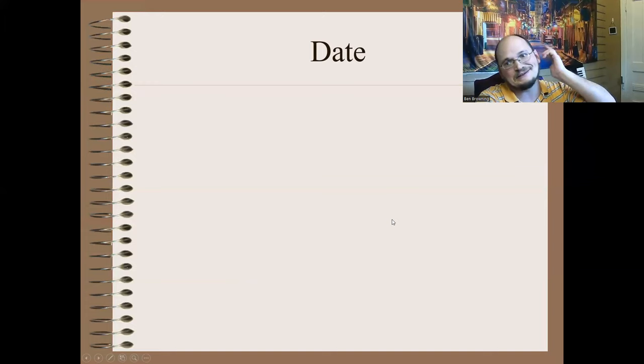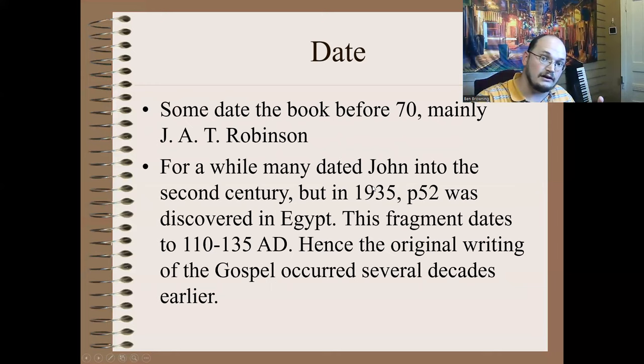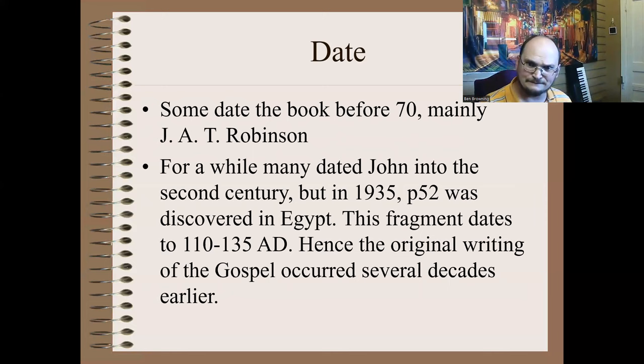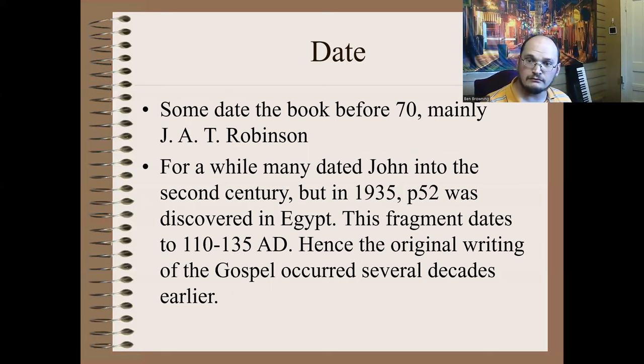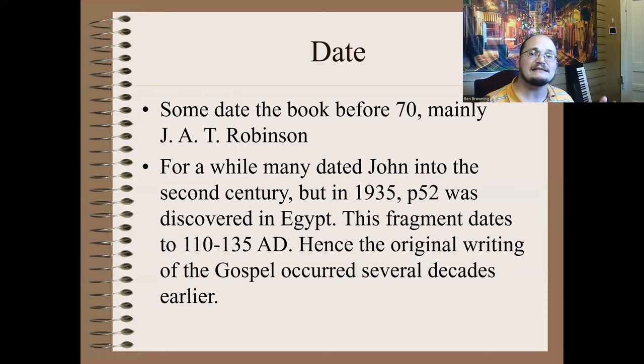Now let's talk about date. Most people date John fairly late — you'll commonly hear between 85 and 100 AD, reasoning that John lived a really long life. A scholar named J.A.T. Robinson wrote a well-known book in the 1970s arguing that almost everything in the New Testament was written pre-70 AD, and he made a good argument for an early date for John, though there were holes in his argument and scholars have questioned his work.